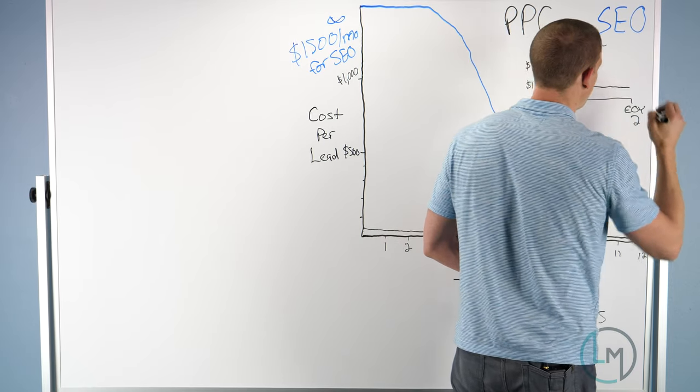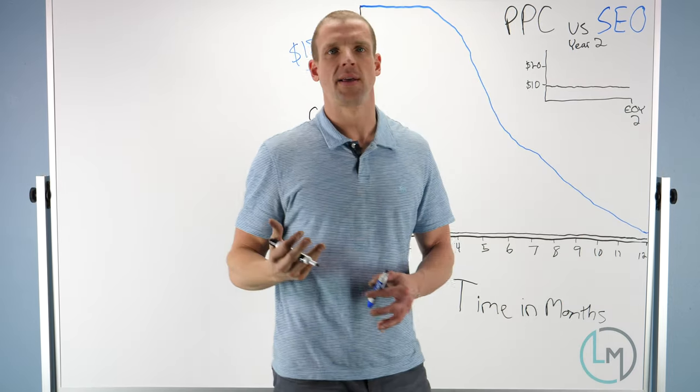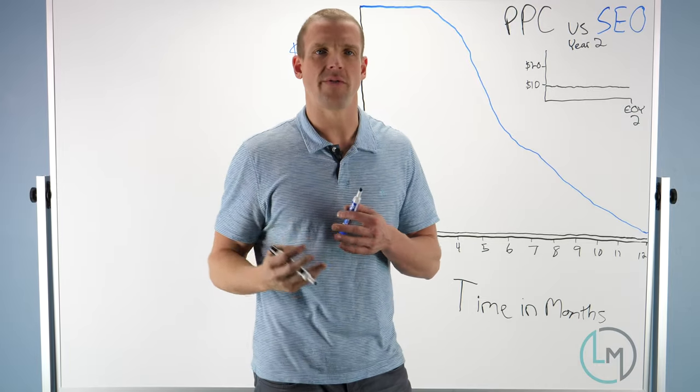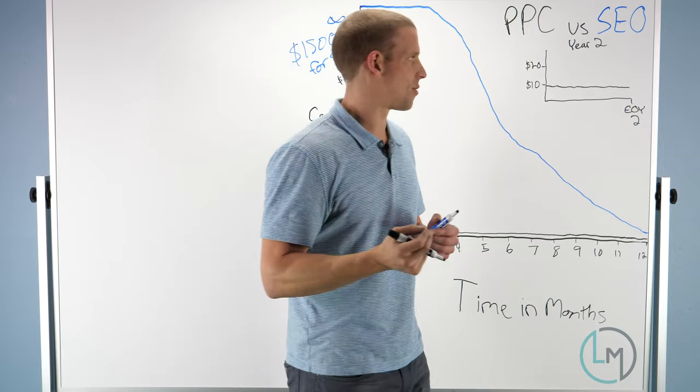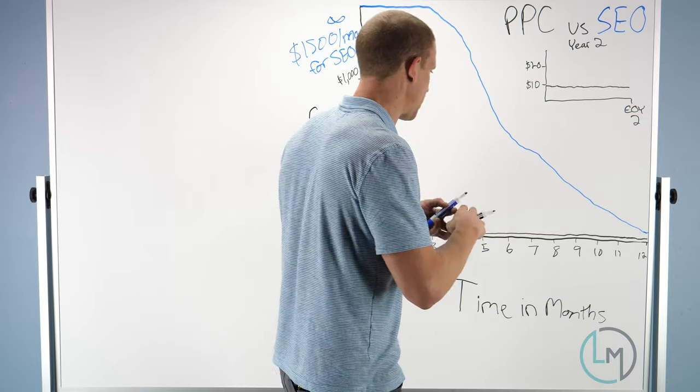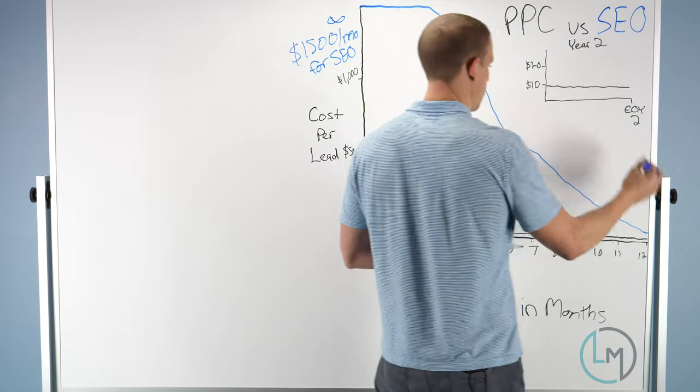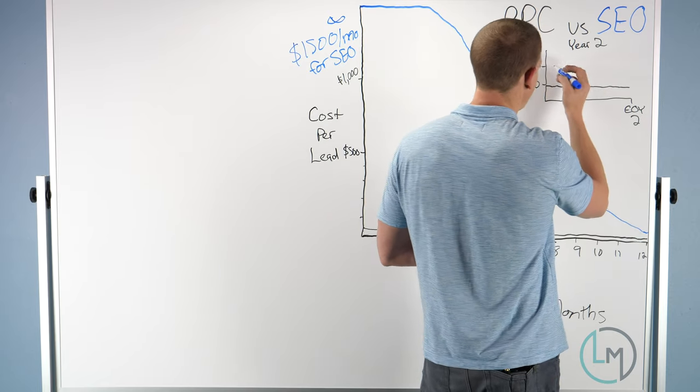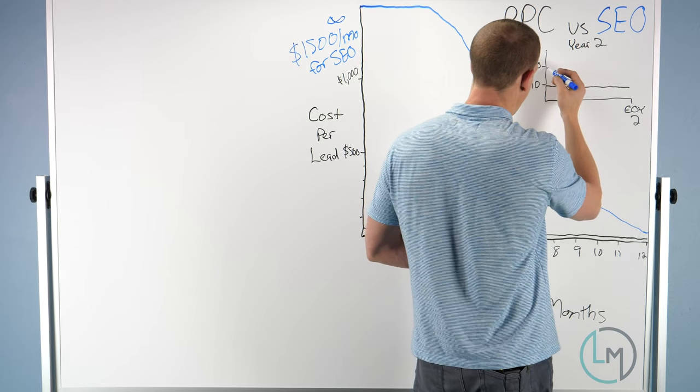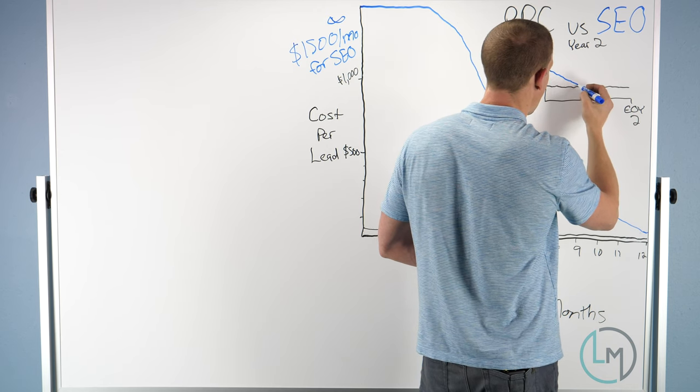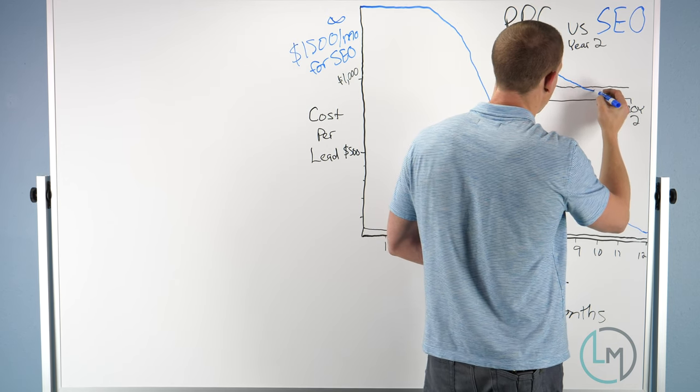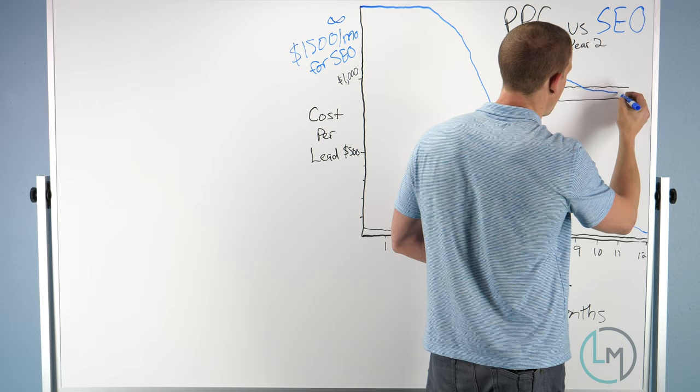At a certain point with pay-per-click, you're not going to keep improving and dropping the cost per lead significantly. Google wants their pound of flesh, so to speak. But with SEO, maybe at the one-year mark we're paying around $20 a lead.